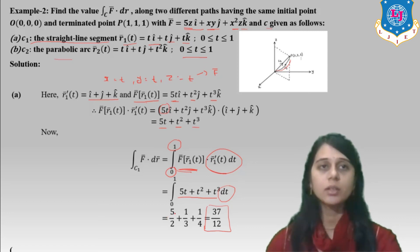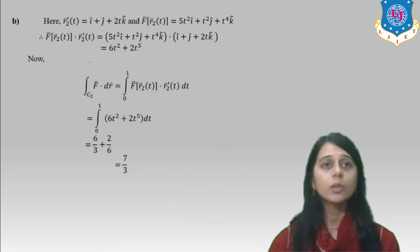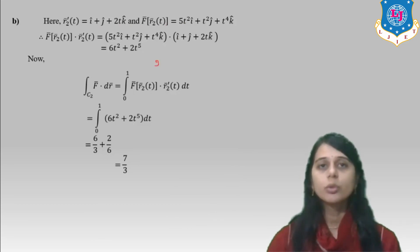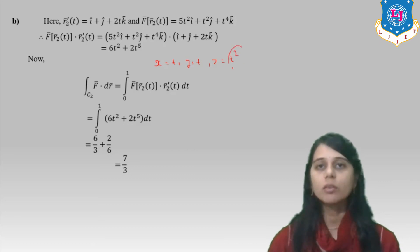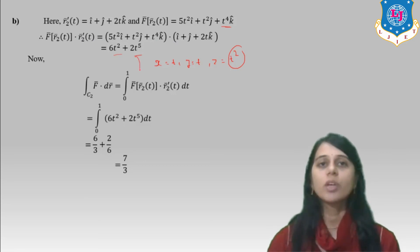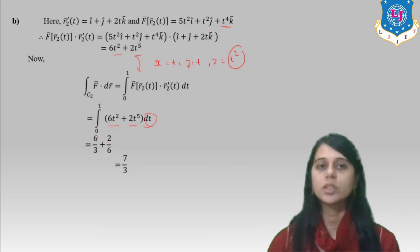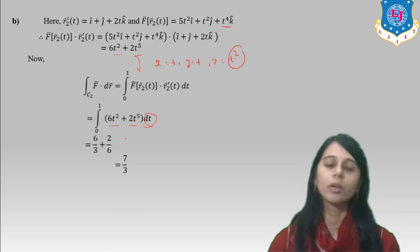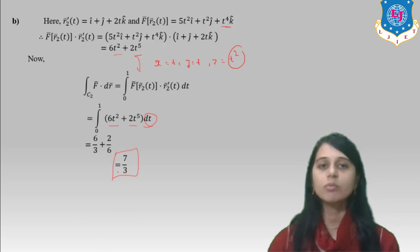Now taking the second path as a parabolic arc: R₂′(t) = i-hat + j-hat + 2t·k-hat. Putting x = t, y = t, z = t² into F-bar, we get terms including t⁴ in the last component. Multiplying F-bar · R₂′(t) gives 6t² + 2t⁵. Integrating: 6t³/3 + 2t⁶/6, evaluated from 0 to 1, gives the answer 7/3 for the parabolic arc.